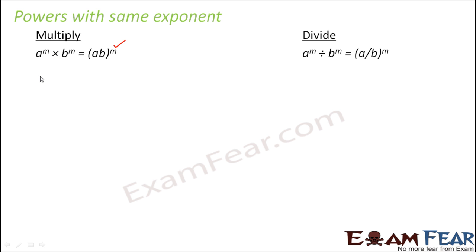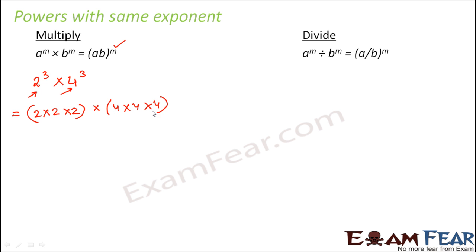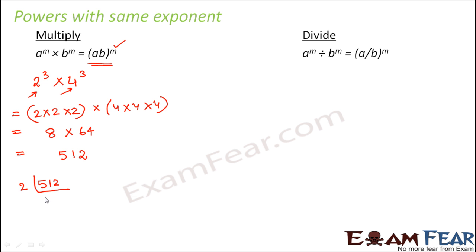To prove this, take 2^3 × 4^3. We have different bases 2 and 4 but the same exponent 3. So 2^3 = 2 × 2 × 2 = 8, and 4^3 = 4 × 4 × 4 = 64. So 8 × 64 = 512. Now to write 512 in exponential form, we find its prime factorization. 512 is exactly divisible by 2: 512 = 2 × 256 = 2 × 128...